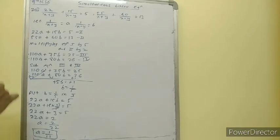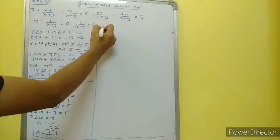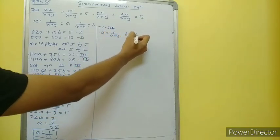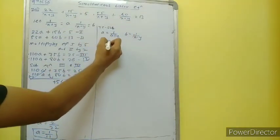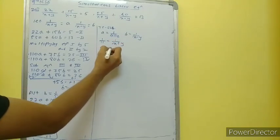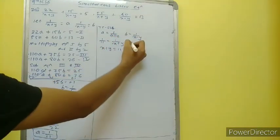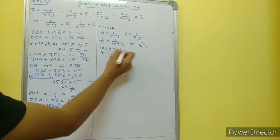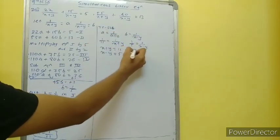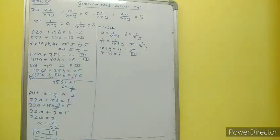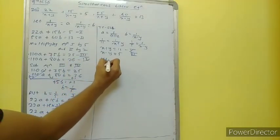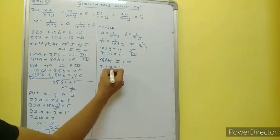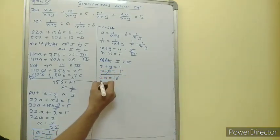We don't want the value of a or b, so we will resubstitute. Resubstituting: a is equal to 1 upon x plus y and b is equal to 1 upon x minus y. Value of a is 1 upon 11, so 1 upon 11 is equal to 1 upon x plus y; this gives x plus y is equal to 11. For b, 1 upon 5 is equal to 1 upon x minus y; reciprocating gives x minus y is equal to 5.